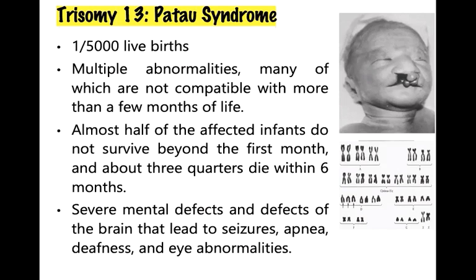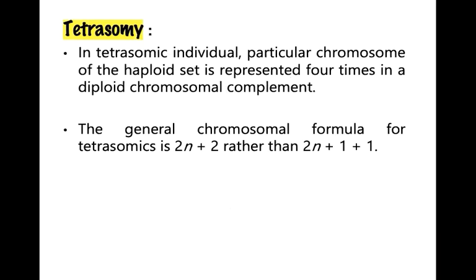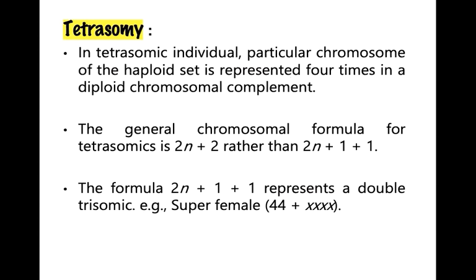Tetrasomic individuals are those in which a particular set of chromosomes of the haploid set is represented four times. In trisomy, the chromosome is represented three times, whereas in tetrasomy, the chromosome of the haploid set is represented four times — that is why they are called tetrasomic individuals.